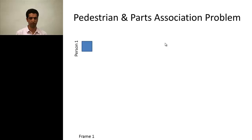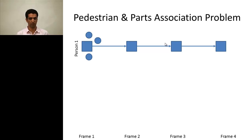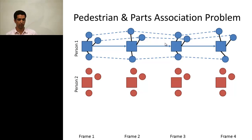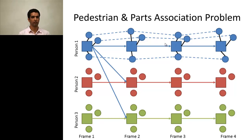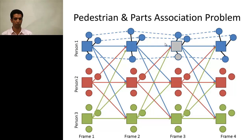Assume we have the person detection in every frame of the video. The perfect track of that person is something like this. We also have parts associated with that person and we want to track all parts of the body. But the problem is that we have multiple persons with multiple parts, and a detection of one person could be associated with another. With misdetection due to occlusion or partial occlusion, we may have broken tracks or ID switches.